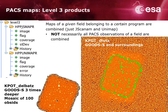Here is an example: a deep observation of the GOODS-South field, where the Level 3 on the left is the combination of 100 observation IDs. On the other hand, we have a survey of the GOODS-South field plus its surroundings — and these are two distinct Level 3 products. They are not combined in the archive since they belong to different programs. If you want to combine them, you can do so by means of the interactive pipelines within the HIPE environment.